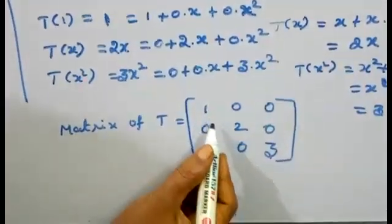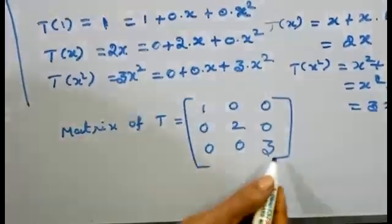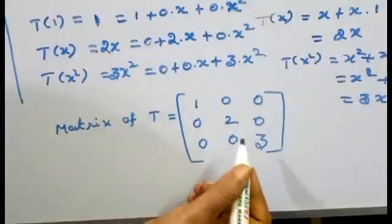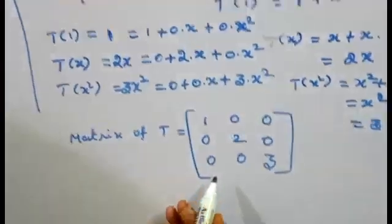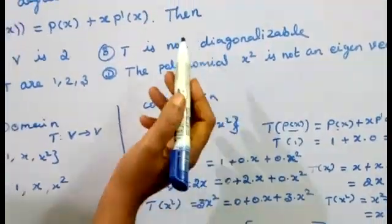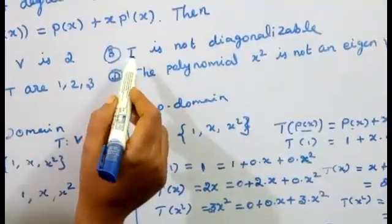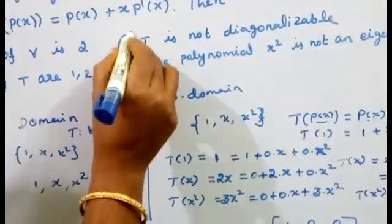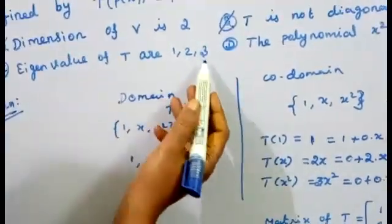The matrix of T is a diagonal matrix with diagonal entries 1, 2, 3. Since the matrix is diagonal, it is diagonalizable. The second option states T is not diagonalizable — that is wrong. The second option is wrong.